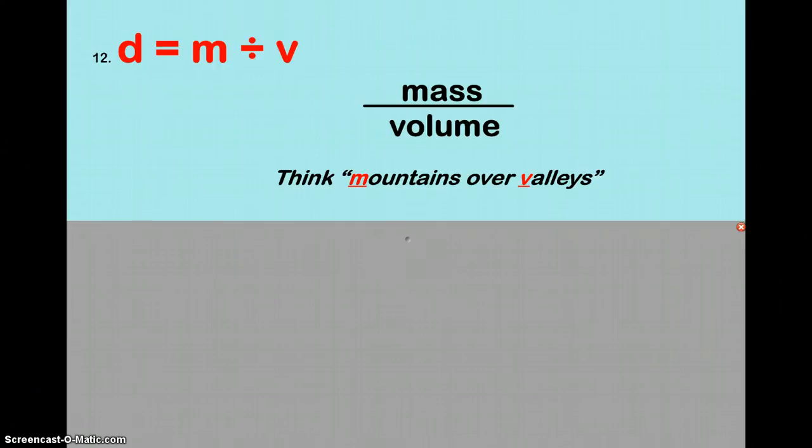Density is a ratio of two measurements, mass and volume, and it's mass divided by volume. We've seen that before. If you need help remembering that, mountains are above, are over the valleys. And so that's why m over v, mountains over valleys.